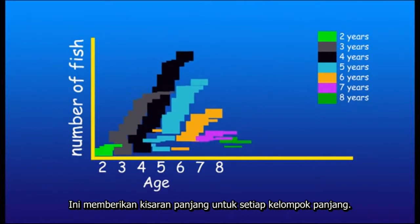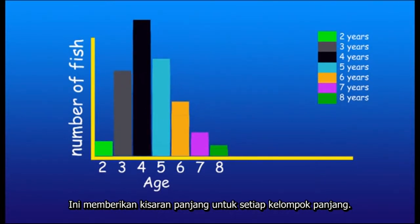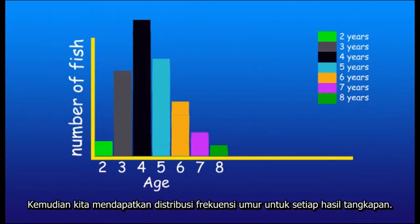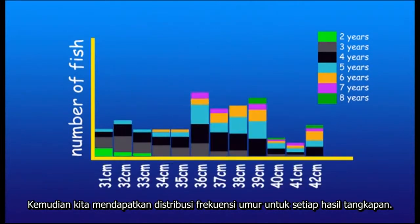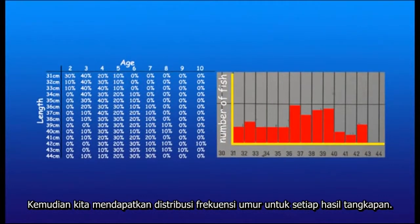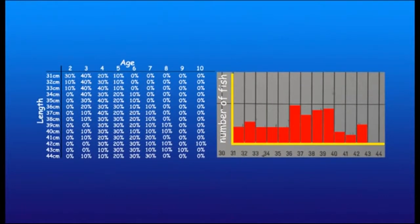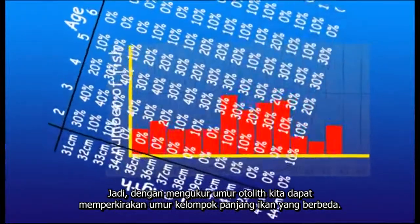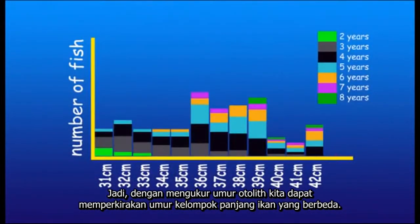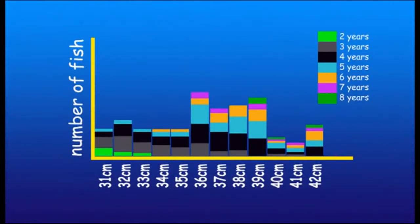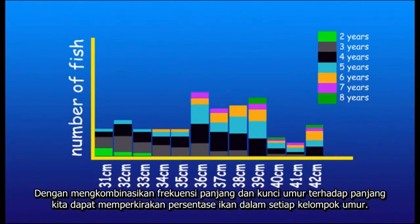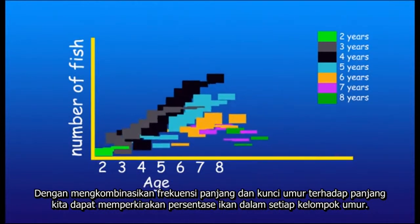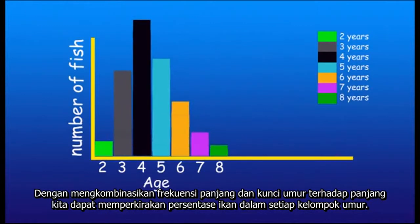What we now want is to group all of our ages together and create a distribution that represents ages on the bottom with numbers of fish on the side. This is our final result: the age frequency distribution of the tiger flathead catch. To recap: we have fish of many different lengths; from ageing of the otoliths, we know each length has fish of different ages. By combining the length frequency distribution and the age-length key, we can see the percentage of fish at each age for each length category. Then, rather than grouping the fish by length, if we group them by age, we get an age frequency distribution.